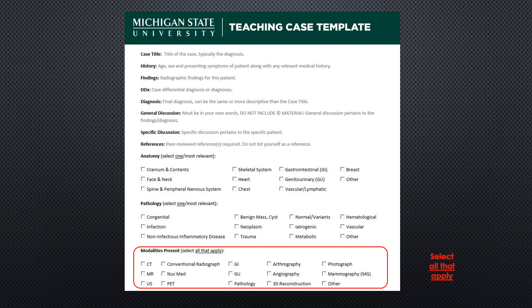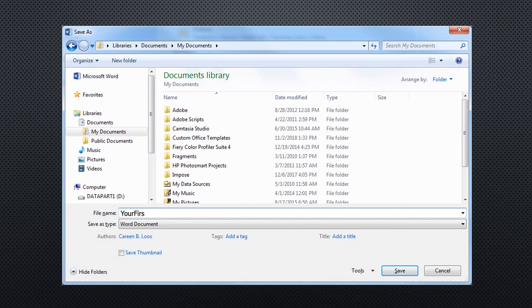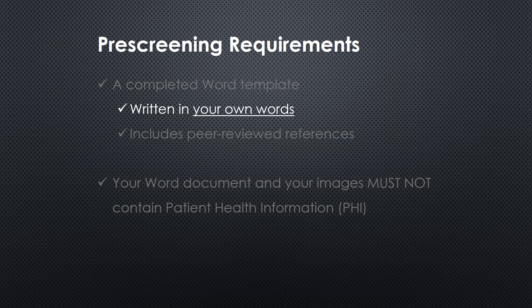Do not insert or paste images into your Word documents. Save each case as a separate Word file with the following format: your first name, underscore, your last name, underscore, case title. For example: Joe_Smith_subdural hematoma. Save copies of all files for your personal records. Your completed Word template will be run through a document check to verify that it was written in your own words. Your write-up should be based on your review of the literature, quality texts, and peer-reviewed resources.